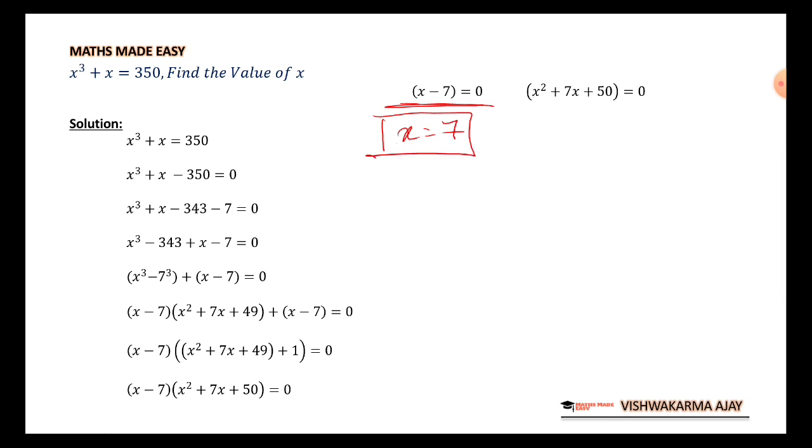One of the root is already found. x is equal to 7. Remaining two roots I can find from here and this looks like a quadratic equation. So, let's go with x is equal to minus b plus minus root of b square minus 4ac upon 2a.